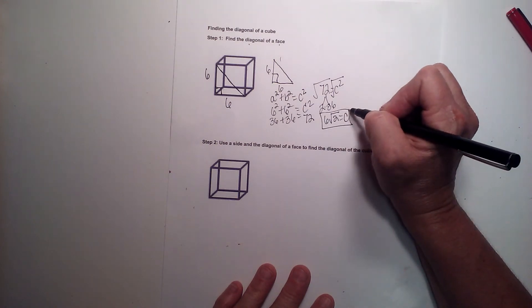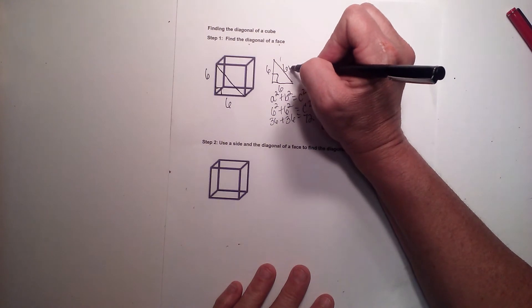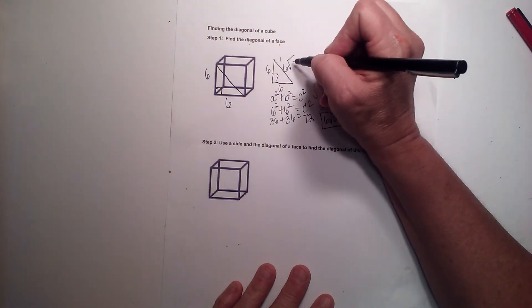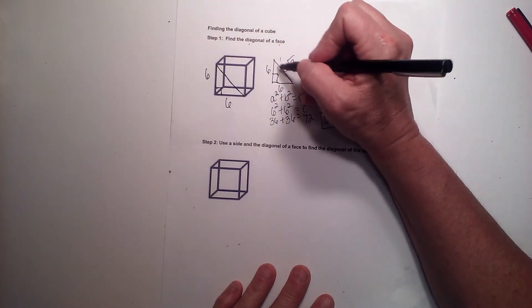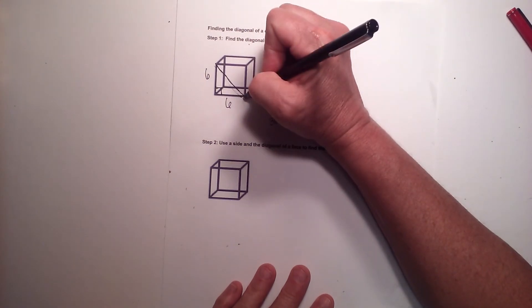And that is the length of the diagonal of the face. So 6 square root 2 is the hypotenuse here, which is the diagonal of this face.